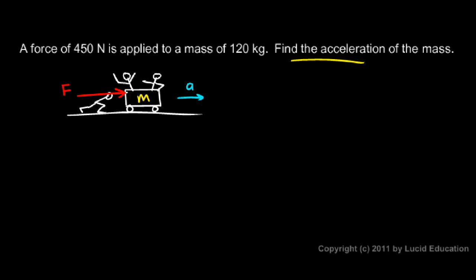And here we find the acceleration with our equation. A is F over M. And we put in the numbers for F. F is 450 Newtons. And the M is 120 kilograms. And we do the math.